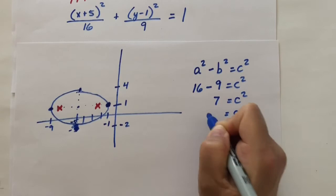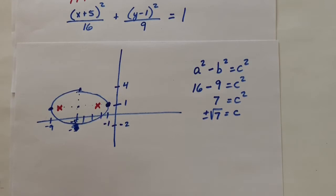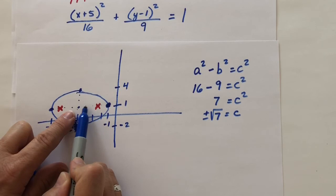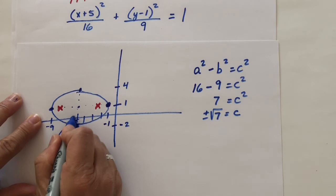And I have a value for c. We get c equals plus or minus the square root of 7. So we move from center. We move √7 units this way and √7 units this way. This point right here, remember, was the point (-5, 1).